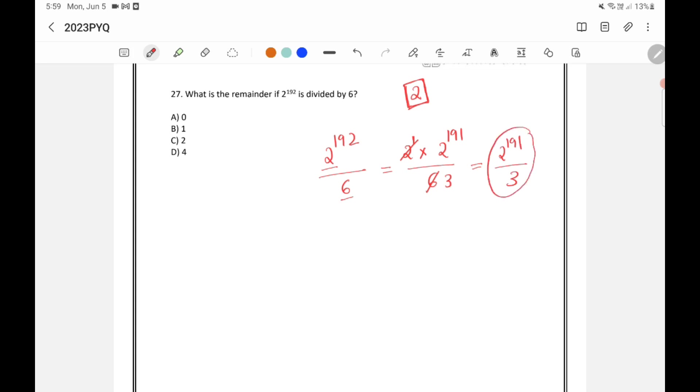Now we know that 3 into 1 is 3. So 3 is a multiple of 3. And this 2 is 1 less than 3. So we can use the concept of negative remainder.